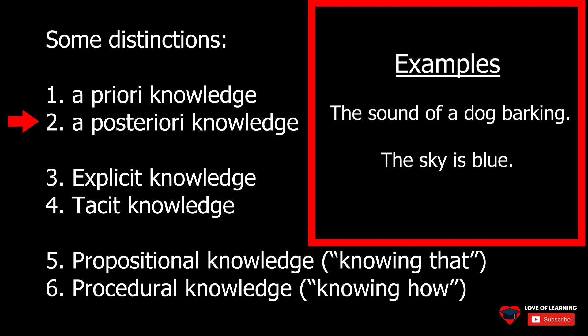A posteriori knowledge is considered the most subjective type of knowledge since it heavily relies on individuals' interpretations of their own observations. Therefore, a priori knowledge is seen as more reliable than a posteriori knowledge.